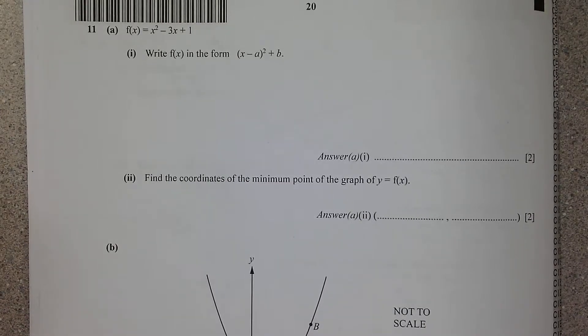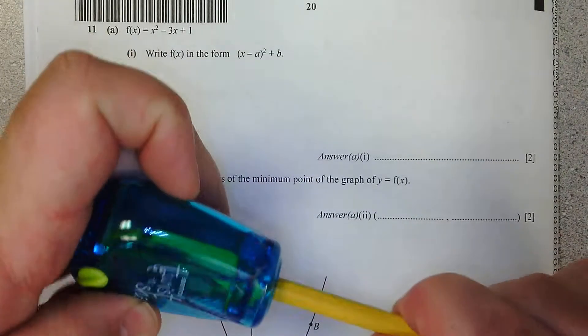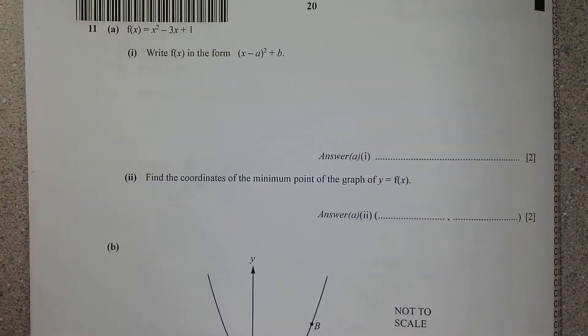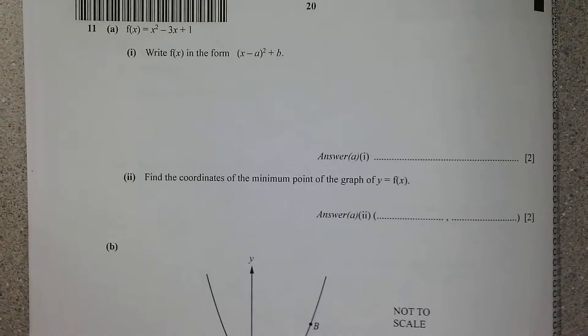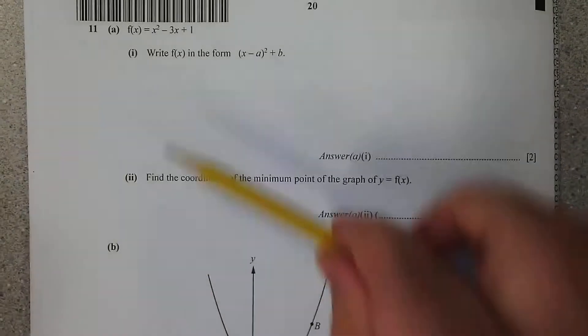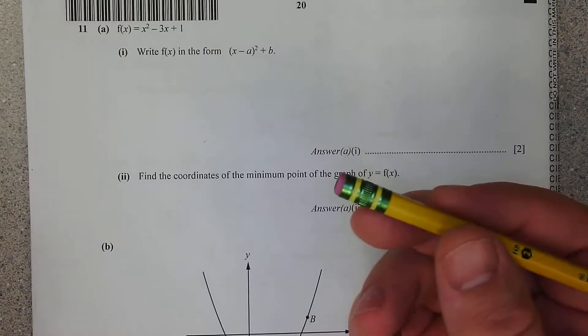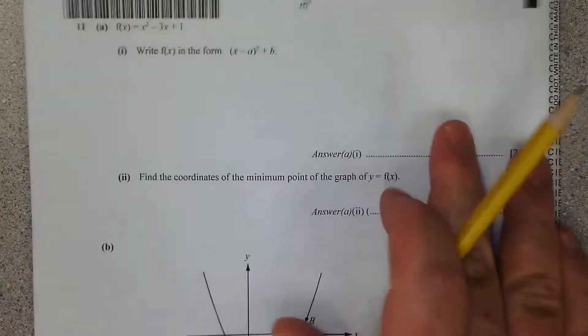All right, boys and girls. Last one. This is number 11 on the paper for Cambridge IGCSE from 2014. We're going to use our fancy Dixon Ticonderoga number two with an almost worn out eraser to knock this last one out.